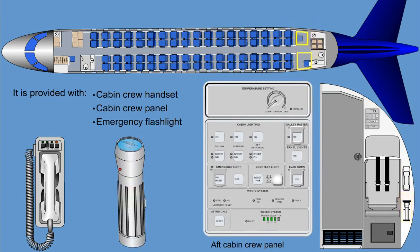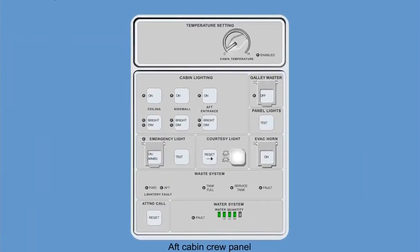The optional third jump seat is an aft-facing seat mounted on the surface of a windscreen. The aft cabin crew panel provides temperature control, a guarded galley master switch to shut off the galley power in abnormal situations, cabin lighting controls, water system indications, and an attendant call reset button.